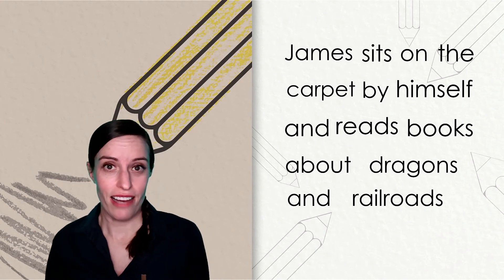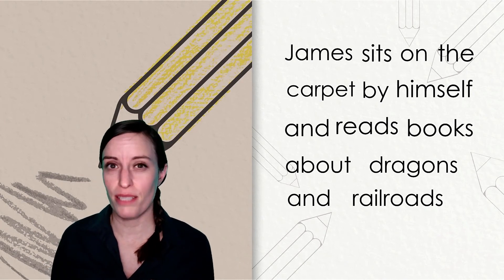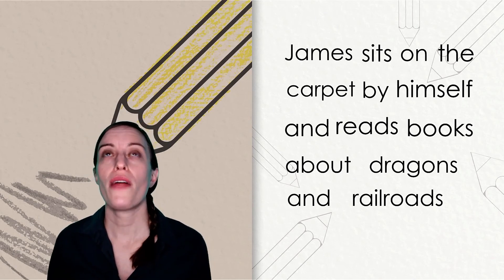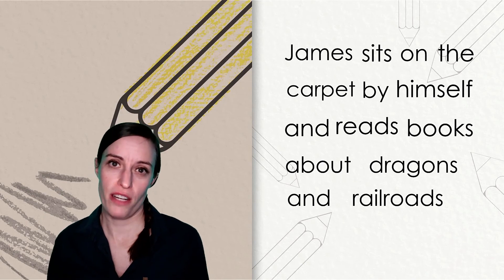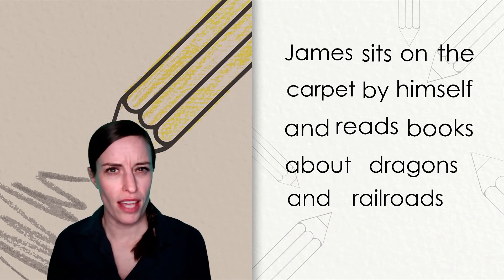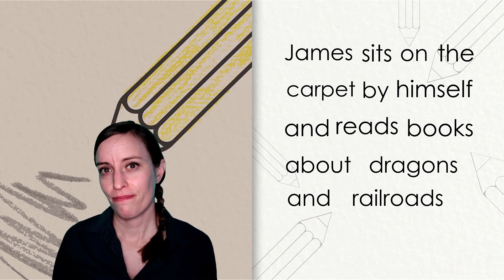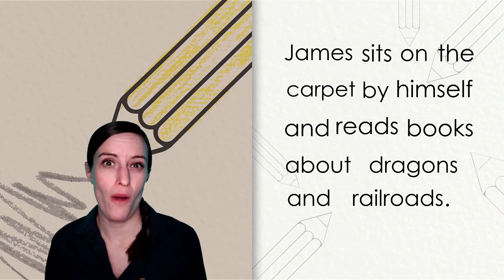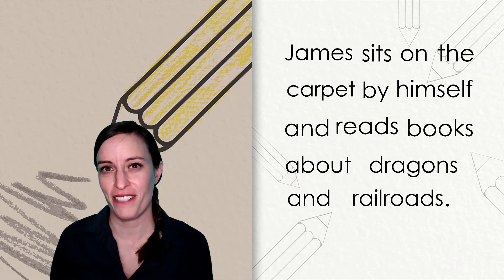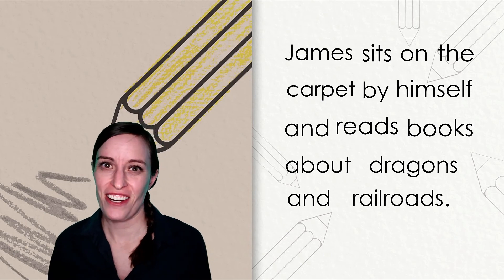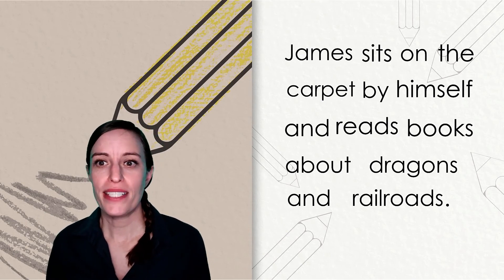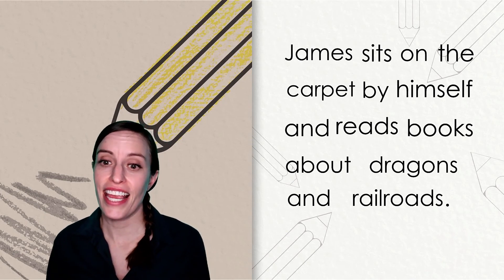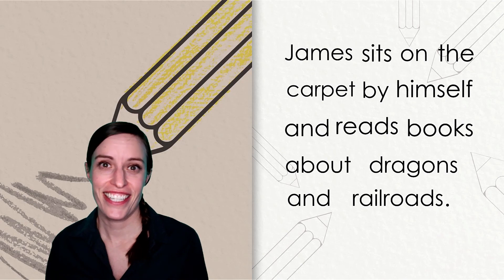Do we need to change anything else? It seems as though we fixed all of the spelling and the capitalization. Oh, that's right. We need a punctuation mark. What mark do you think we should put here? A period. The author is telling us about what James is reading about. Let's read the whole sentence together. James sits on the carpet by himself and reads books about dragons and railroads. Nice editing.